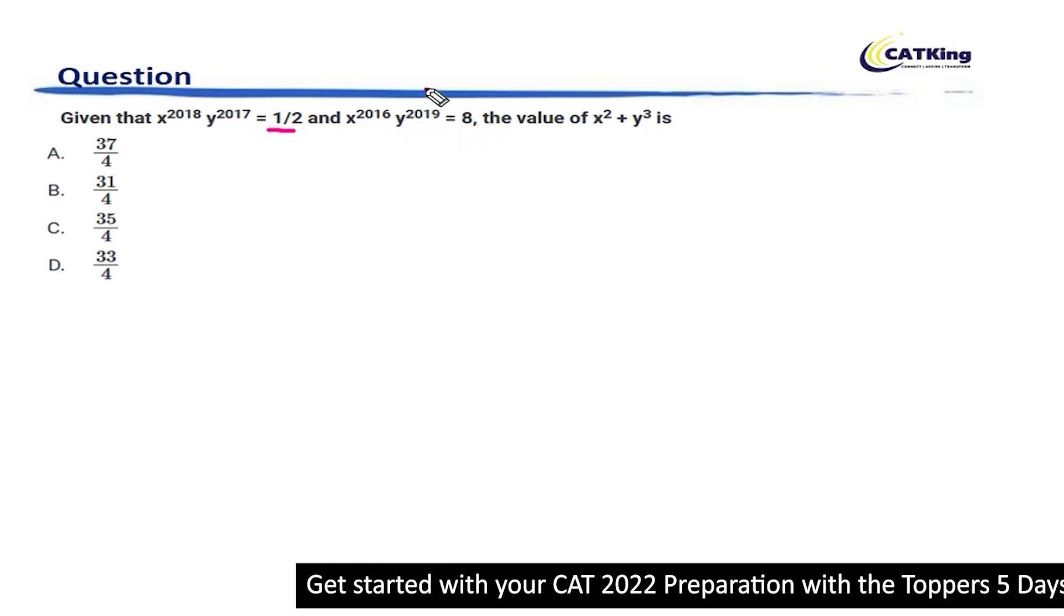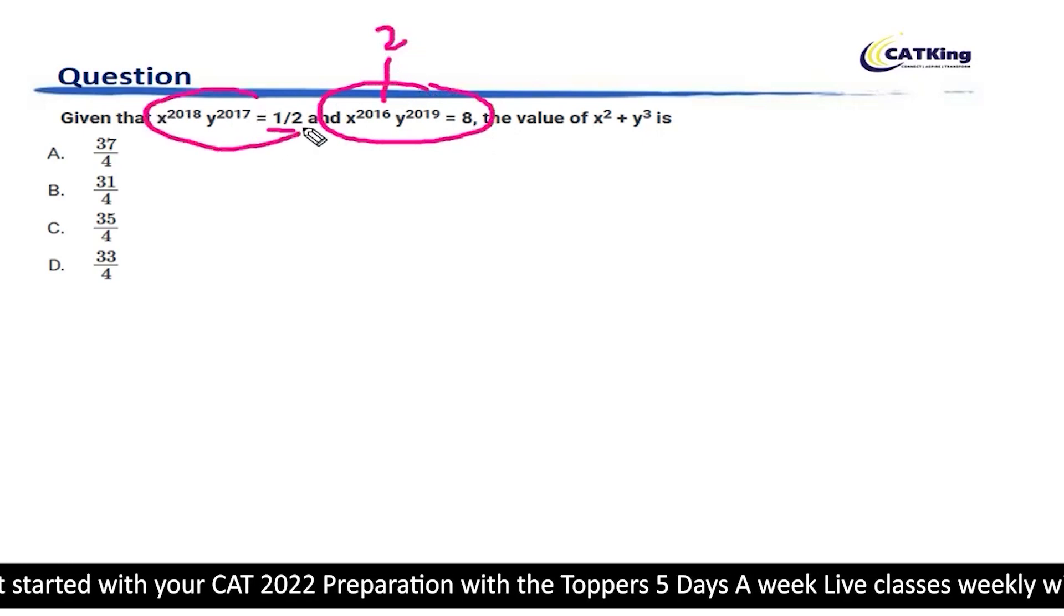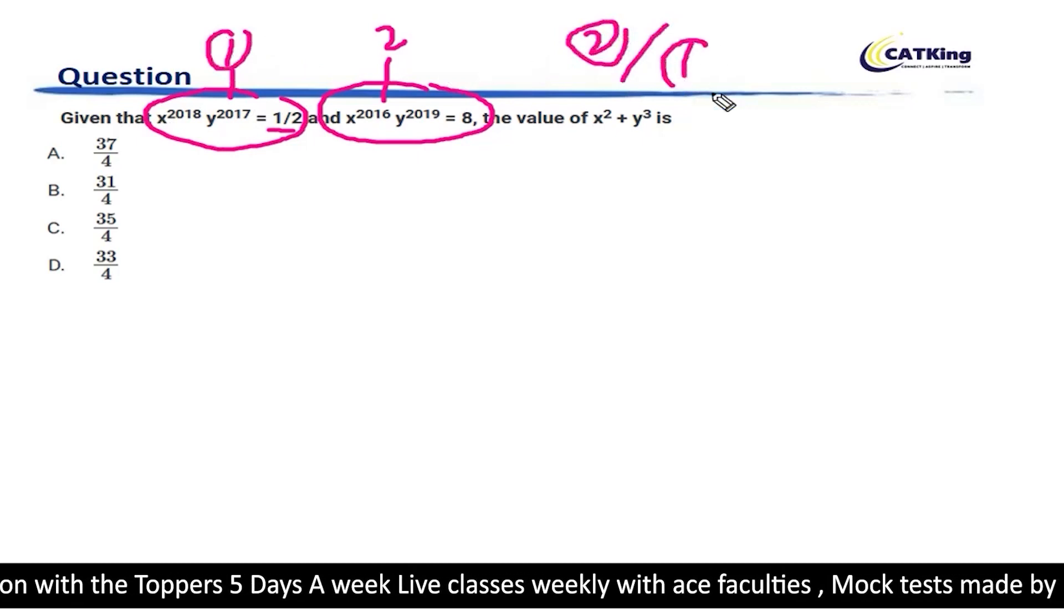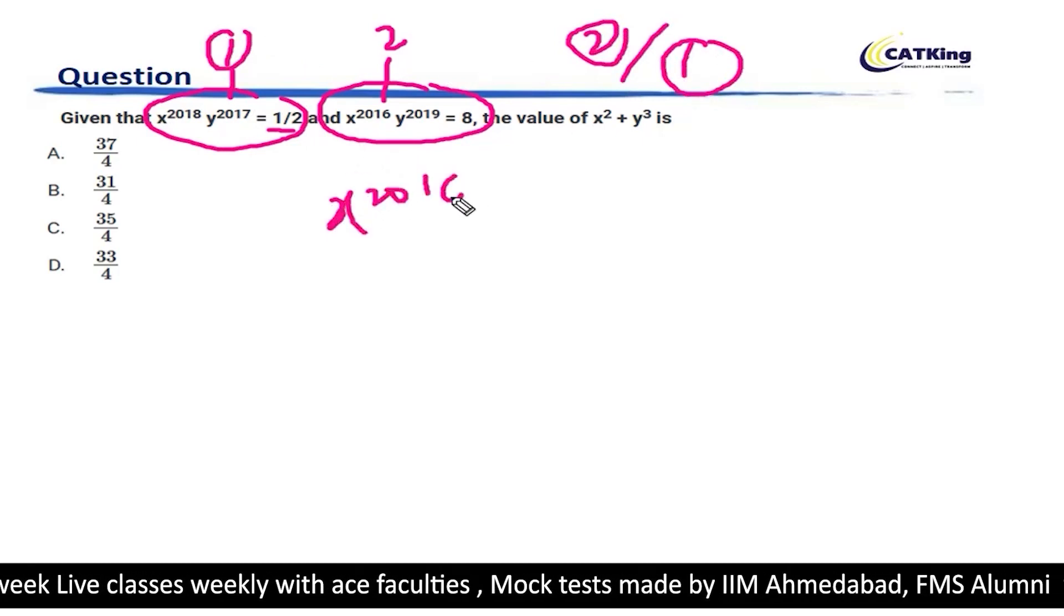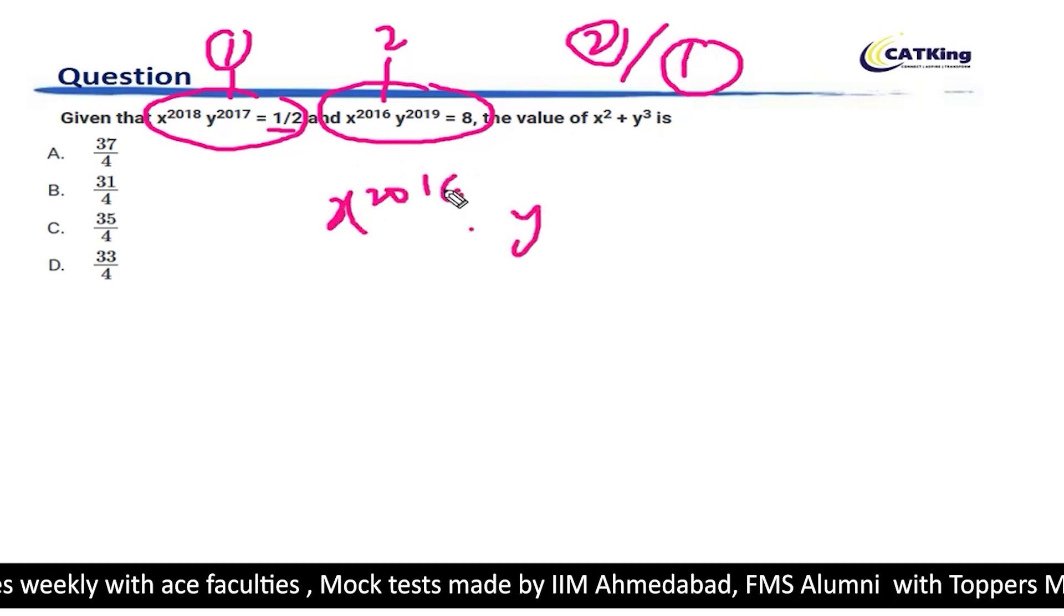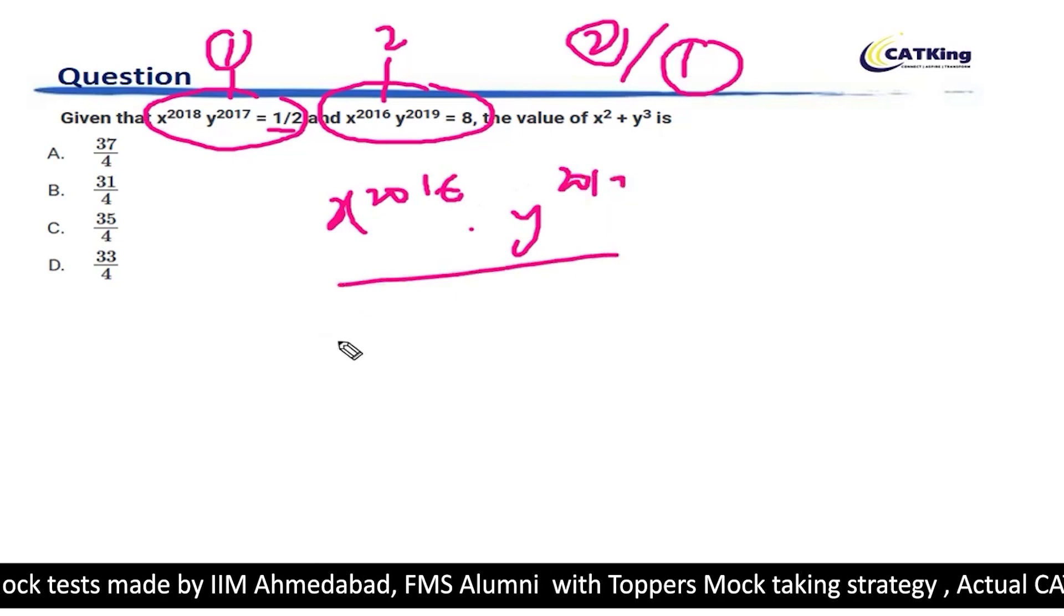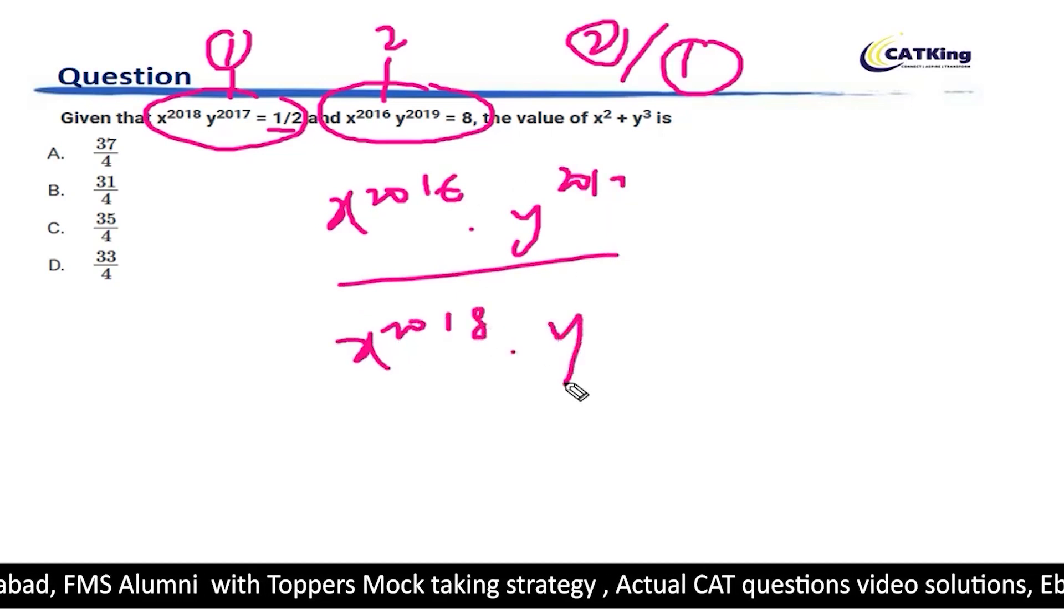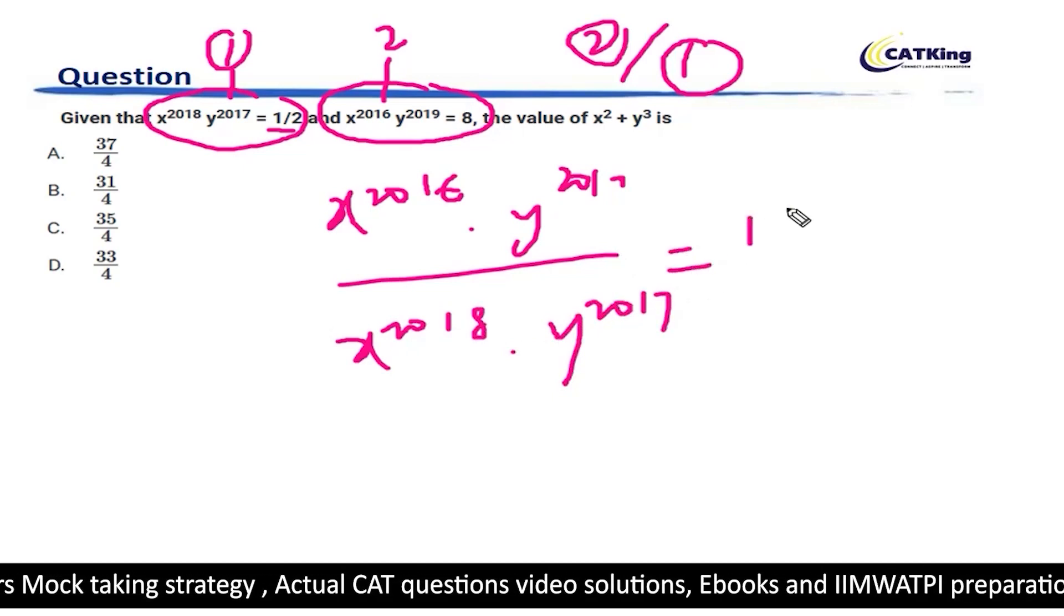Now, if I divide, let's say I say this as equation 2 and I take this as equation 1. Let us divide equation 2 by equation 1. So, in that case, x to the power 2016 into y to the power 2019 divided by x to the power 2018 into y to the power 2017 becomes equal to 16.